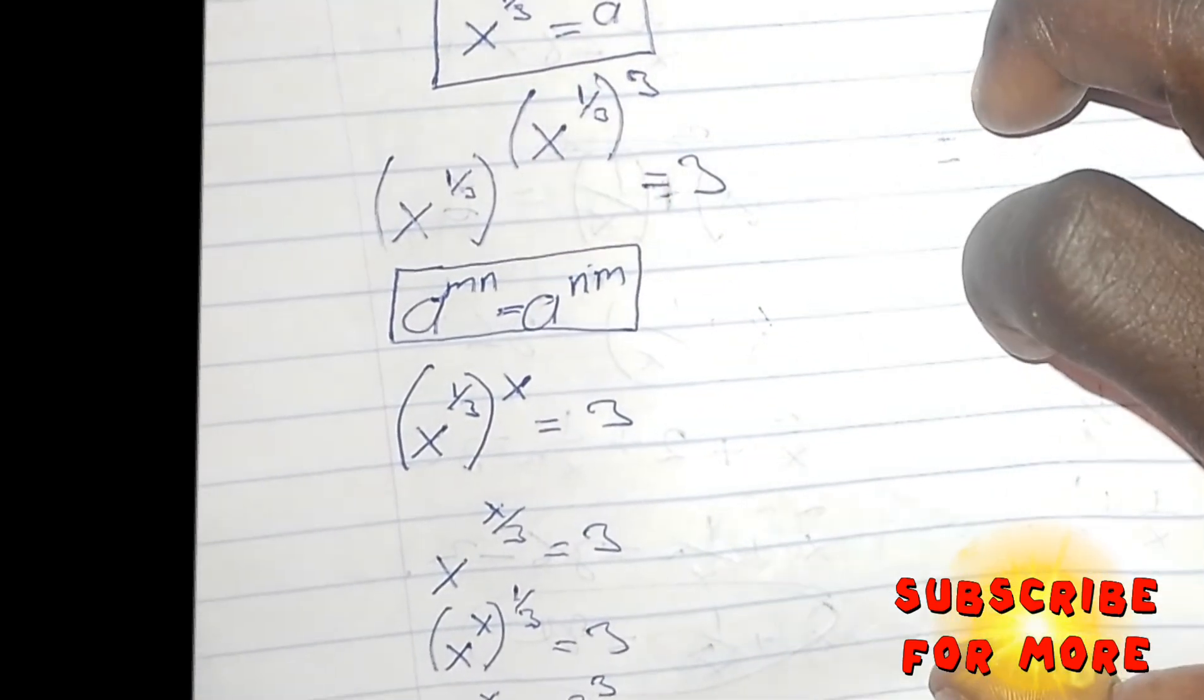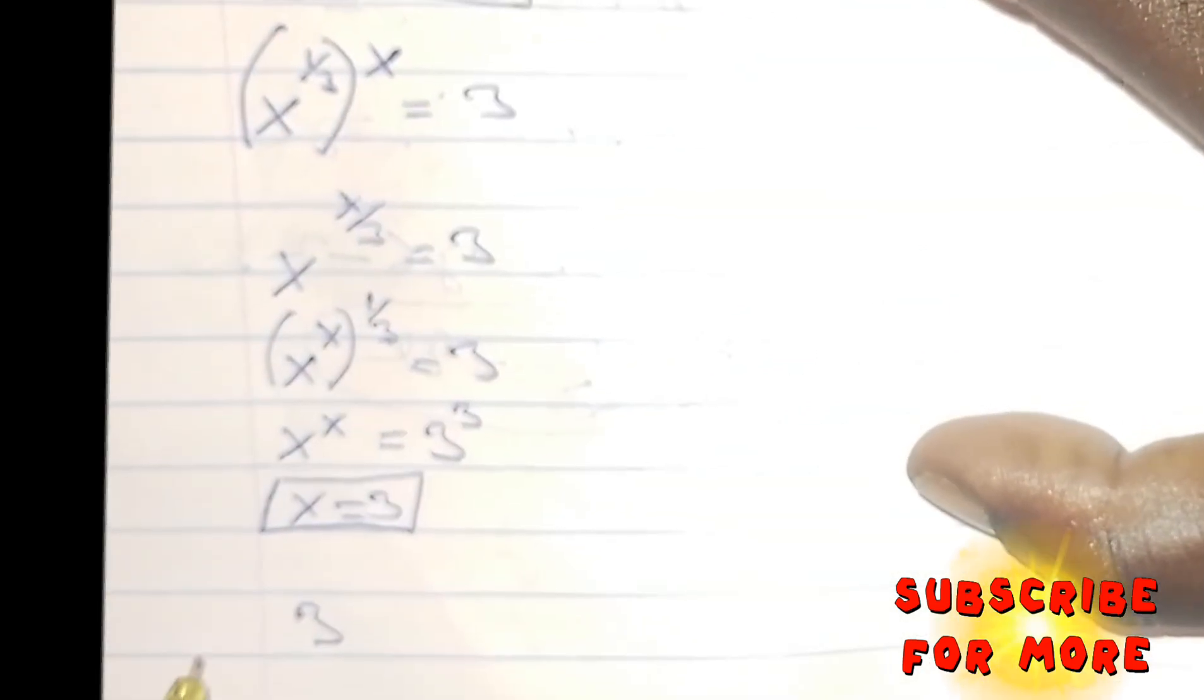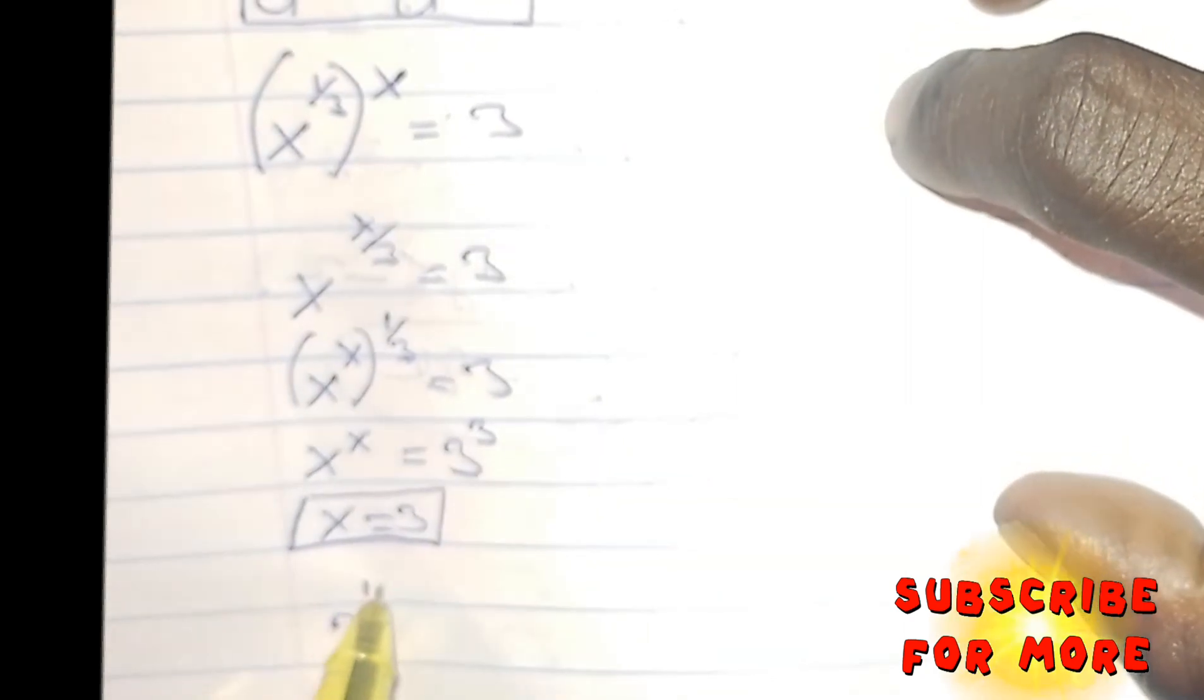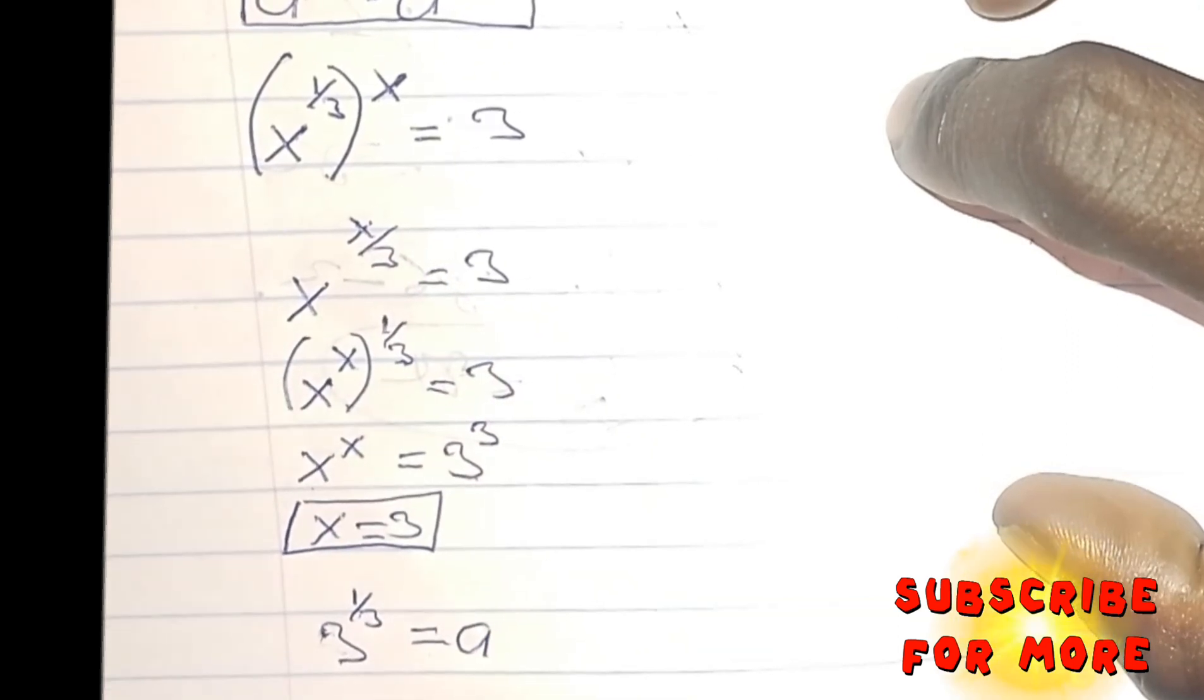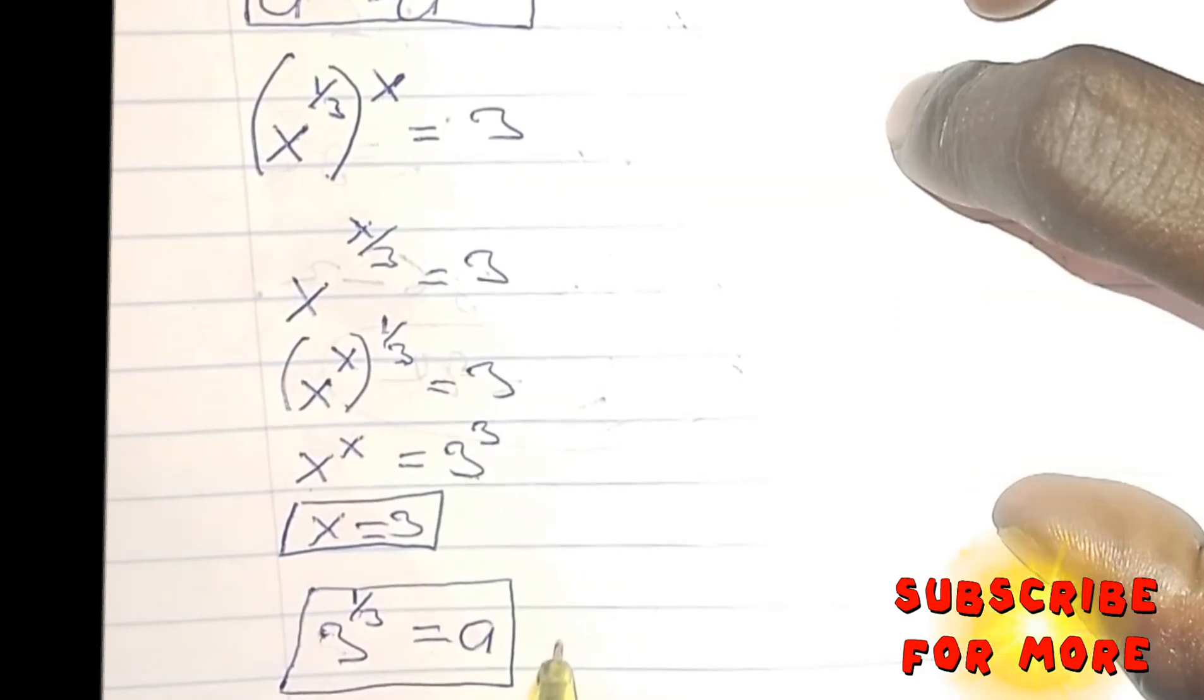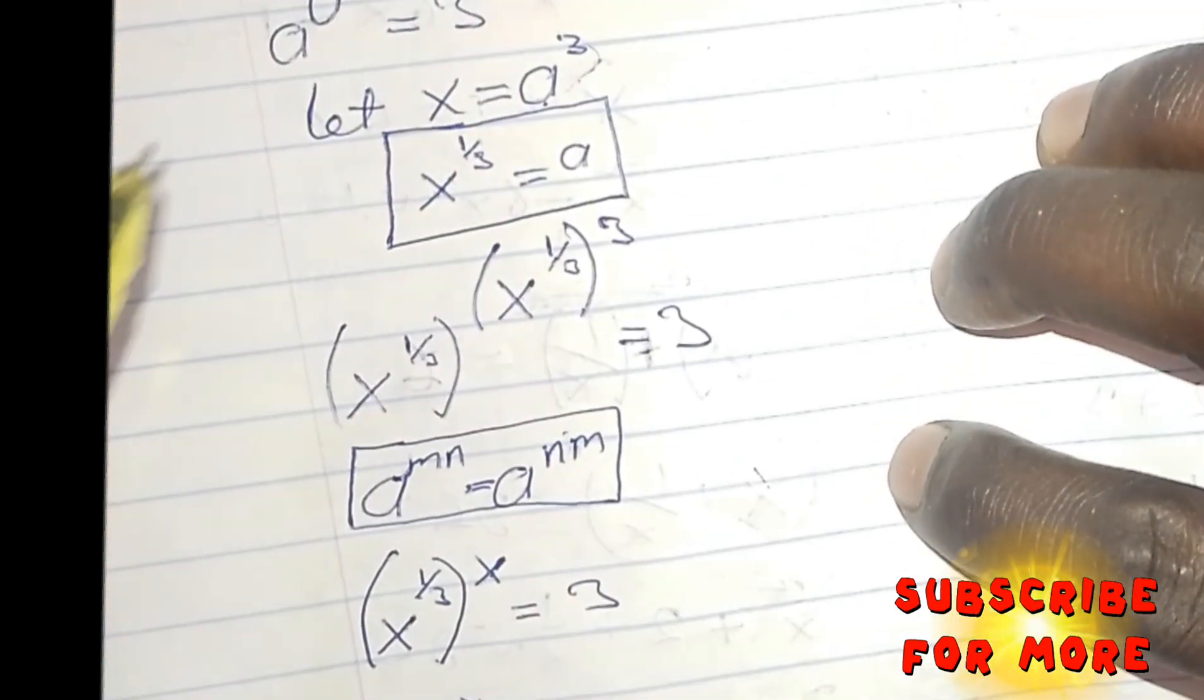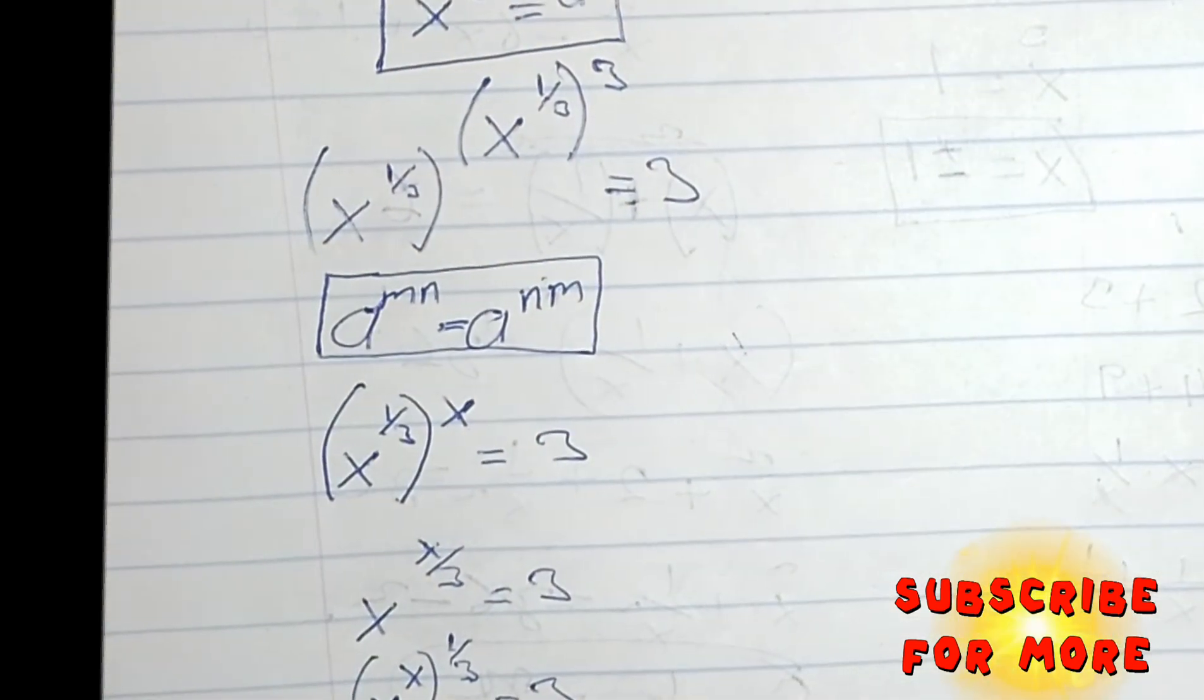If X is 3, so that means 3 to an exponent of 1 over 3 is equals to A. This is the value of A that will satisfy this particular equation. If you learn something new, don't hesitate to subscribe.